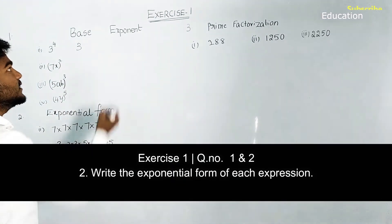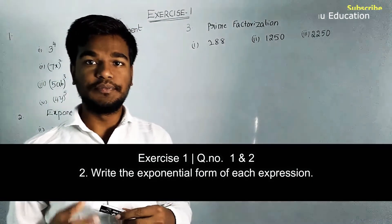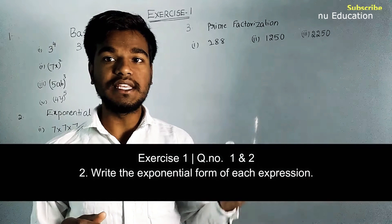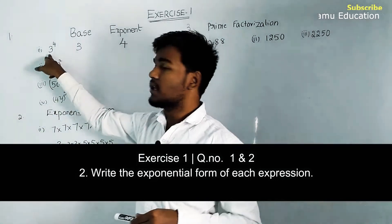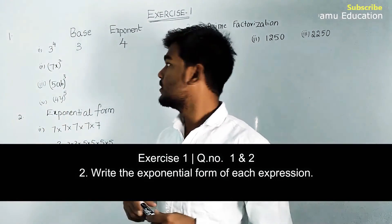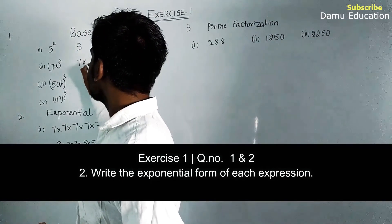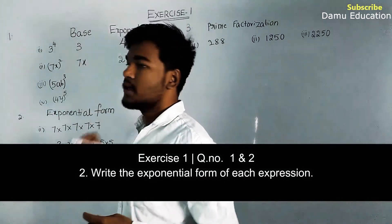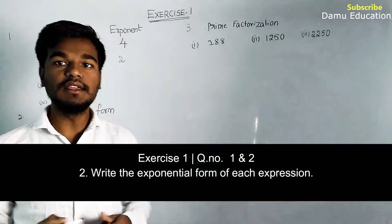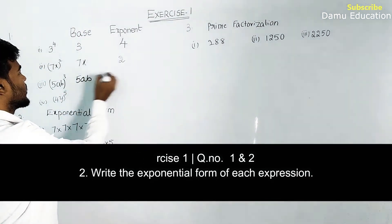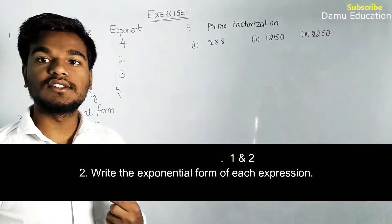In our first question, the base is 3 and the exponent is 4. The meaning of exponent 4 is that 3 appears in multiplication four times: 3 × 3 × 3 × 3. Next, 7x is the base and the exponent is 2. Then 5ab is the base and the exponent is 3. For (4 minus n), the base is (4 minus n) and the exponent is 5.